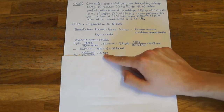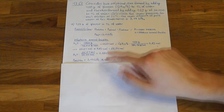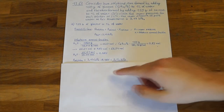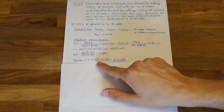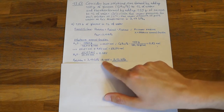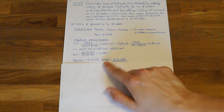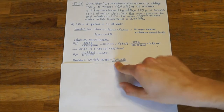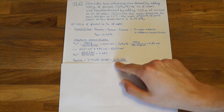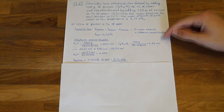We can now substitute these results into Raoult's law to calculate the vapor pressure: 3.17 kilopascal, the vapor pressure of our solvent, multiplied by 0.985, the substance amount fraction of our solvent, shows us that the vapor pressure of this solution is 3.12 kilopascal. This was part A.